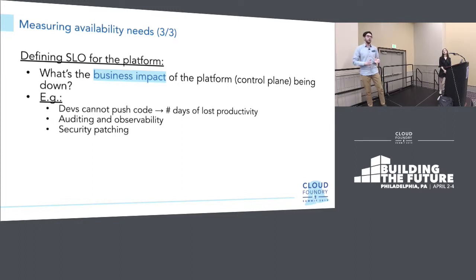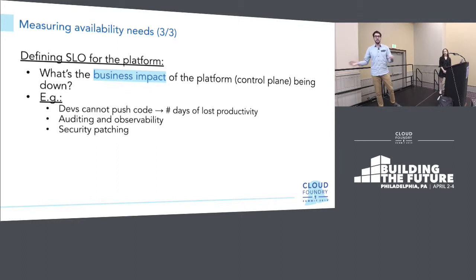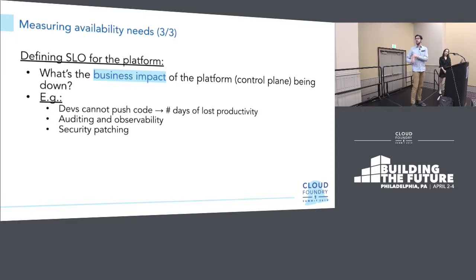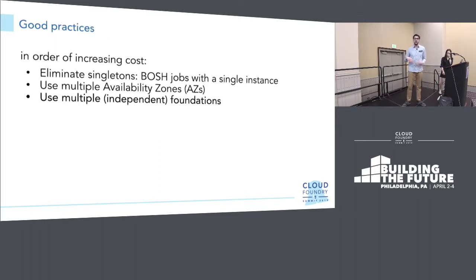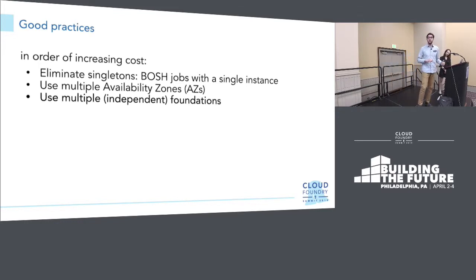It's very important to differentiate availability requirements for the platform versus the workloads. For the platform, we measure business impact of the control plane being down — not the workloads. Examples could be loss of productivity: your platform is down, you cannot CF push, so you have 100 developers sitting around doing nothing. Or loss of auditing and observability — your workloads are running but you've lost your platform control plane and have no metrics. Security patching is another big one. Measuring the impact of the platform being down and coming up with an SLO is really important.